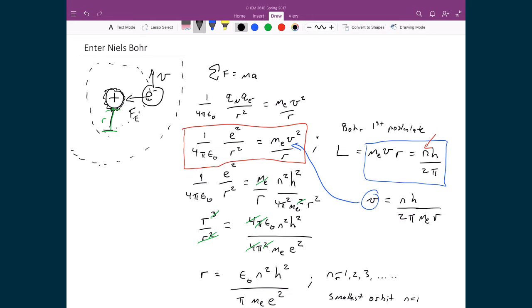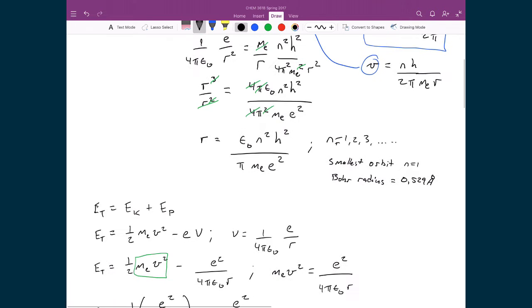And so by doing that we were able to calculate the radius of the allowed orbits inside this model of the atom, and that's what this means: R is equal to ε₀ n² h² over π times mass of the electron times the elementary charge squared.